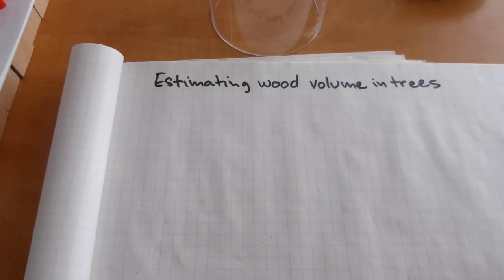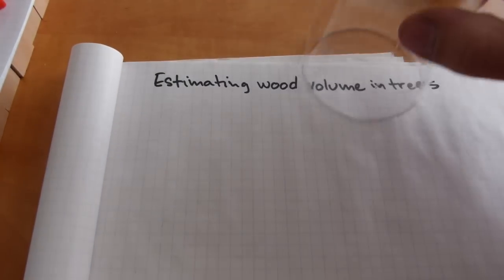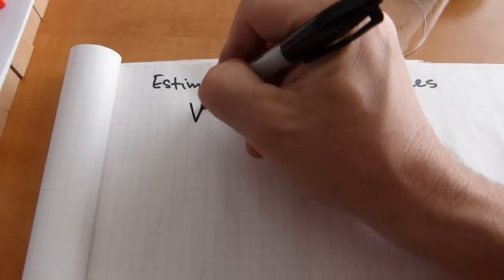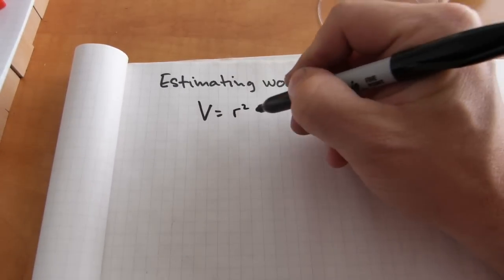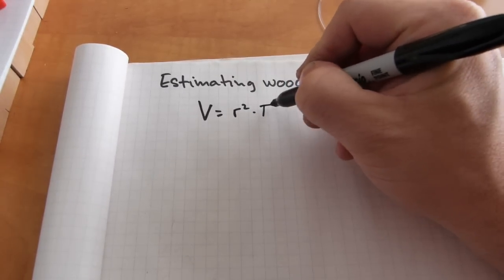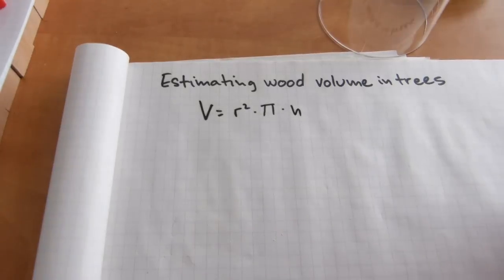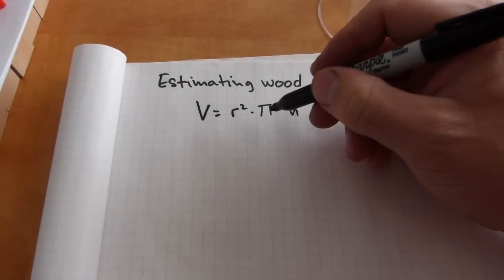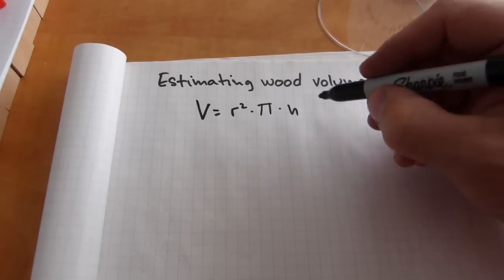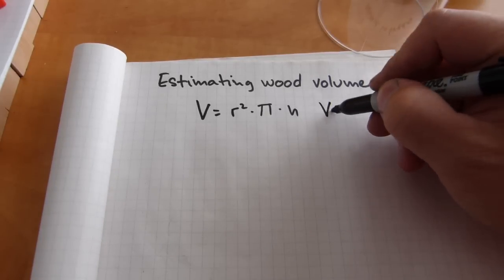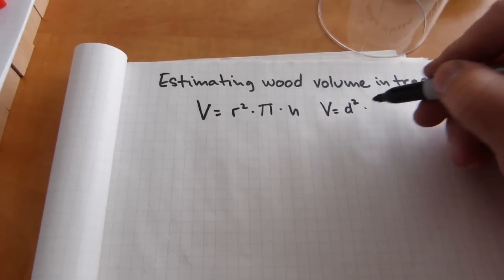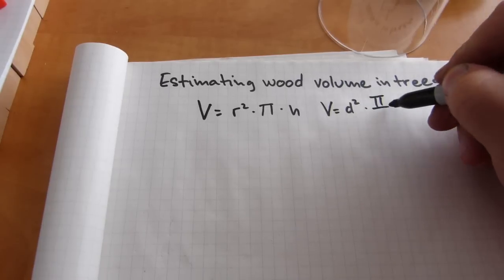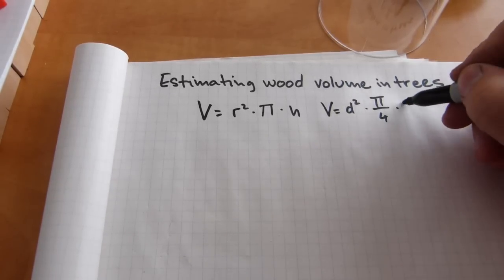Now, on a cylinder, the volume of a cylinder is calculated by either r squared times pi times height, or if you don't like r squared pi or pi r squared, you can also calculate volume using the diameter. Diameter squared times a fourth of pi or a quarter of pi times height.